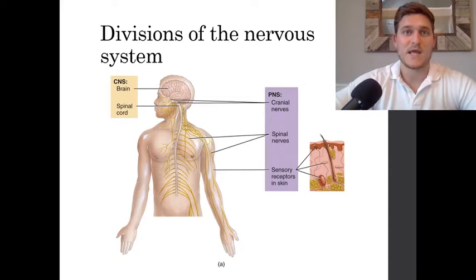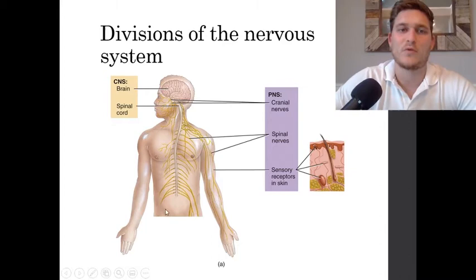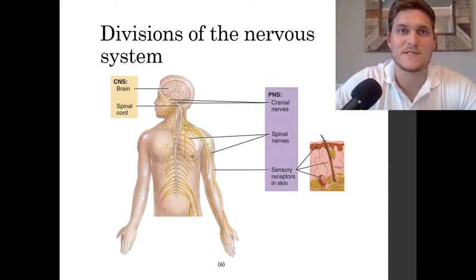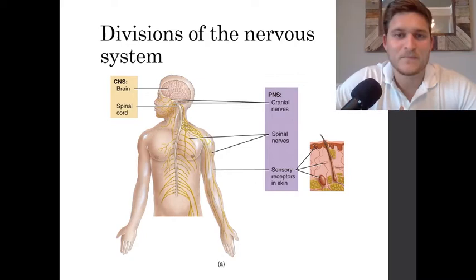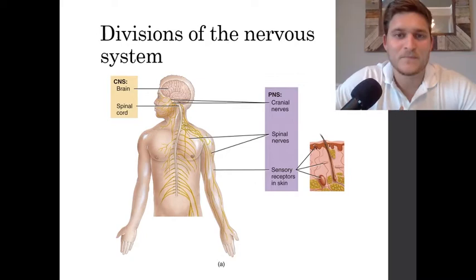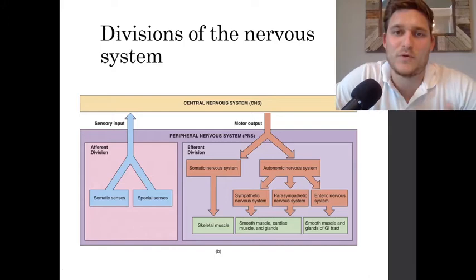We can divide the nervous system into multiple subcategories. If we want to look at it anatomically, the neurons that make up the brain and the spinal cord are called the neurons of the central nervous system. The central nervous system is going to help process information about our environment and help carry out movement. We also have neurons which communicate from the brain and the spinal cord to the rest of our bodies, and that's called the peripheral nervous system.